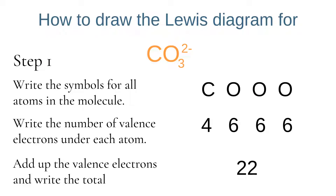The first example we will look at is the carbonate ion. This has one carbon and three oxygen atoms and an overall charge of two minus. The first step, just like for molecules, is to write the atoms involved — one carbon and three oxygens — and then write the number of valence electrons each atom has and count up the total. In this case we have 22 valence electrons.